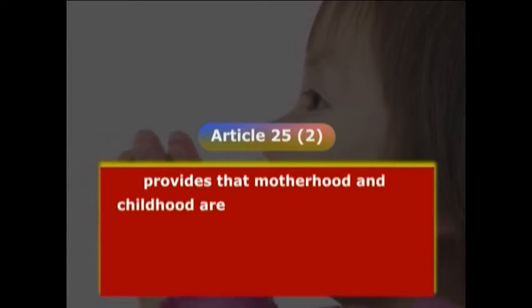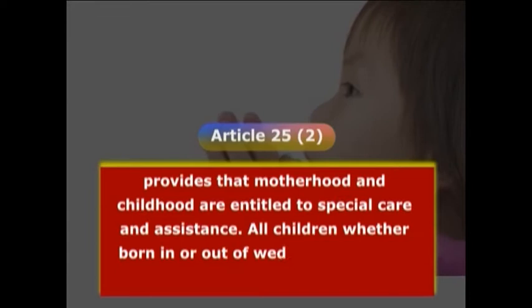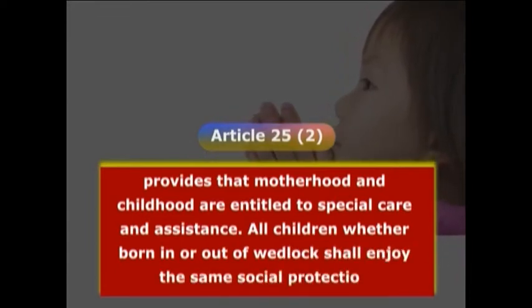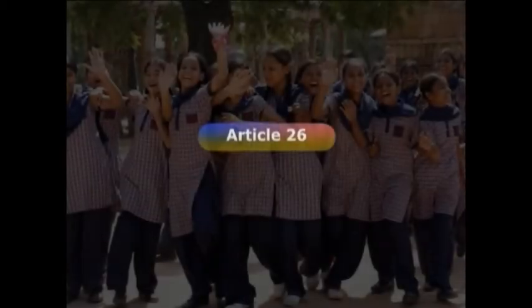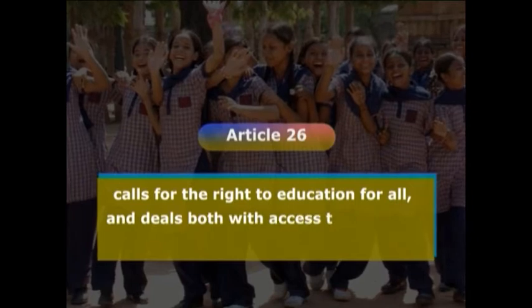Though the declaration is not a legally binding global document on human rights, it is intended to serve as a universally accepted common standard of achievement for all people and all nations. Even in the context of protection of child rights, the declaration provides two special provisions. Article 25 provides that motherhood and childhood are entitled to special care and assistance. All children, whether born in or out of wedlock, shall enjoy the same social protection. Article 26 calls for the right to education for all and deals with both access to and the aims of education.